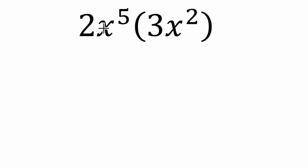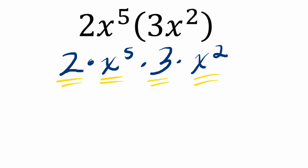What I mean is I've got two times x to the fifth, that's the same thing as two times x to the fifth. And this is being multiplied as well, times three times x squared.